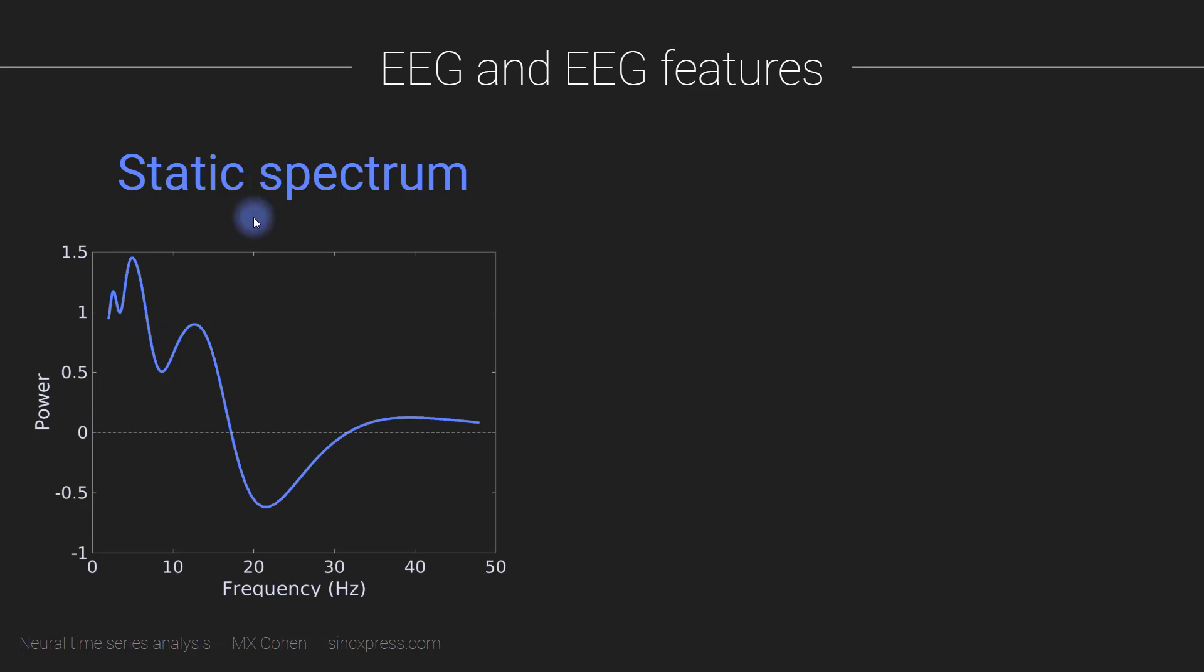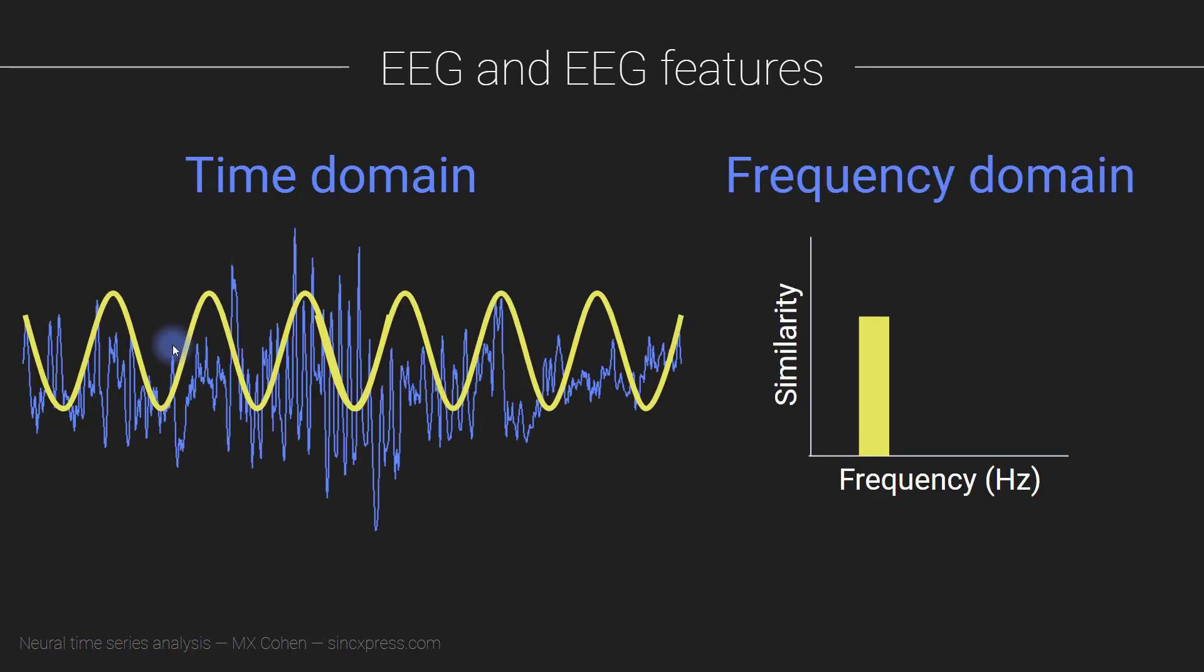I call this a static spectrum, because it gives us one static glimpse into the features, the rhythmic features of the entire signal. So here, we don't distinguish between what's happening in this part of the signal and what's happening in this part of the signal.